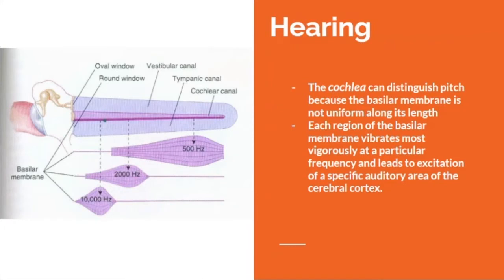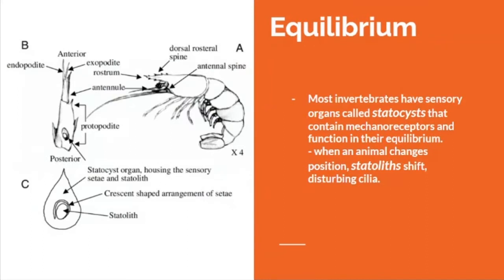The cochlea can distinguish different frequencies because the basilar membrane is not uniform along its length. Each region of the basilar membrane vibrates most vigorously at a particular frequency, leading to excitation of a specific auditory area of the cerebral cortex.